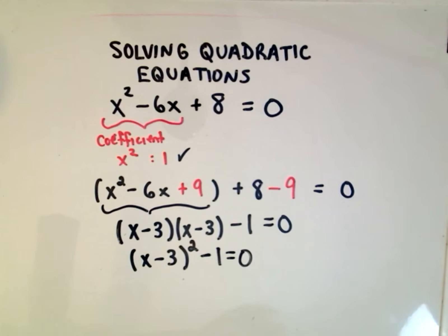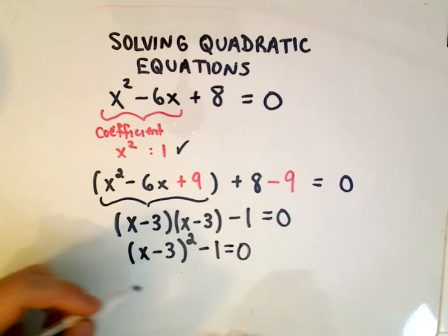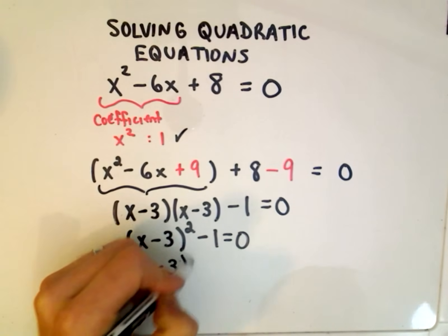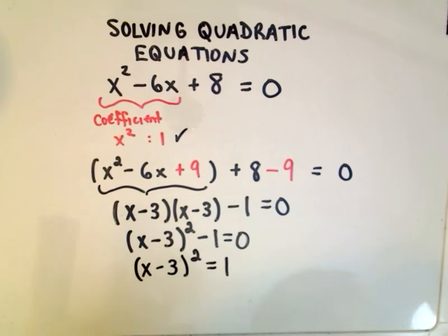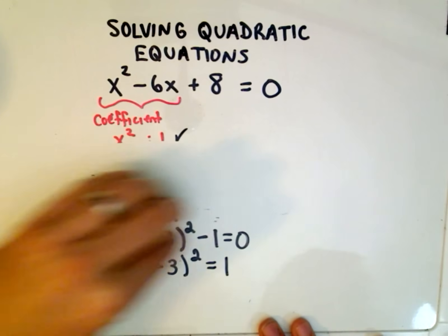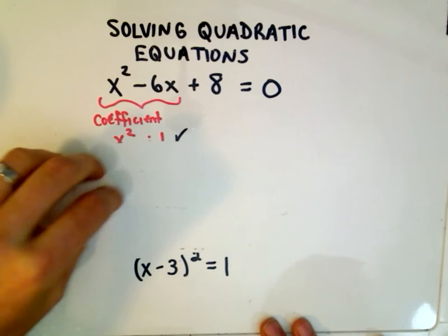Okay, so again, we're trying to solve a quadratic equation here. What we do at this point is, you now simply add the 1 to both sides. So x minus 3 squared equals positive 1. And the whole point of solving a quadratic equation by completing the square is getting to the step that we're at right now.